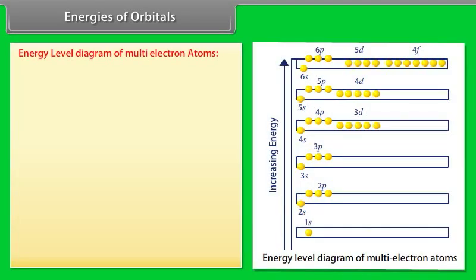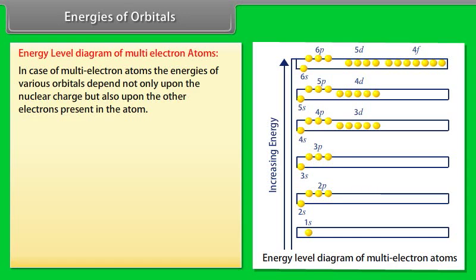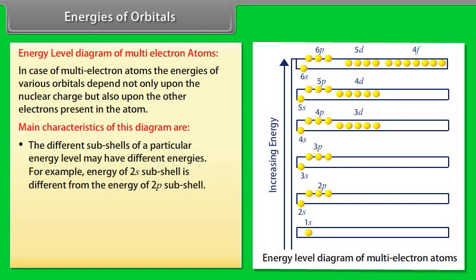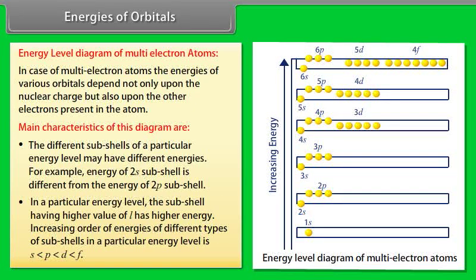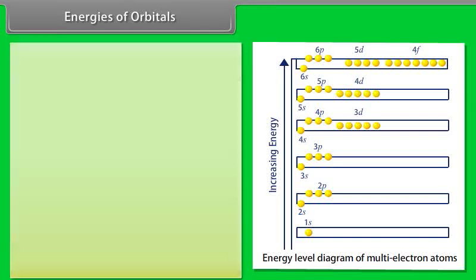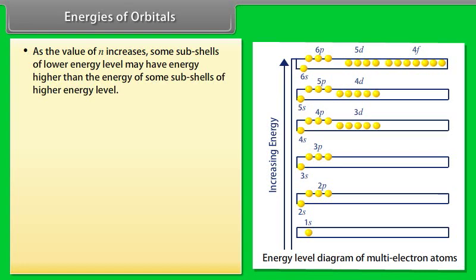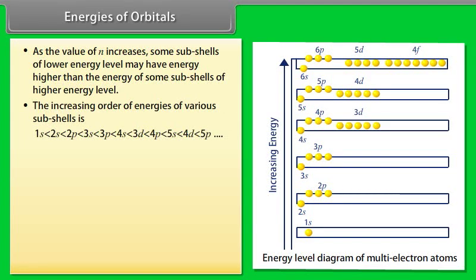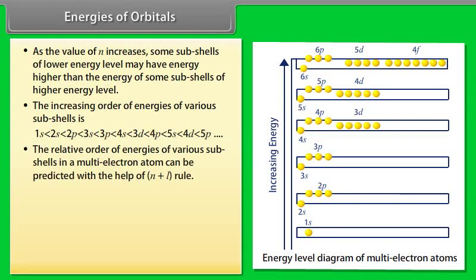Energy Level Diagram of Multi-Electron Atoms: In multi-electron atoms, the energies of various orbitals depend not only upon the nuclear charge but also upon the other electrons present in the atom. Key characteristics: (1) Different subshells of a particular energy level may have different energies — for example, the energy of the 2S subshell is different from that of 2P. (2) In a particular energy level, the subshell with higher value of L has higher energy. (3) As N increases, some subshells of a lower energy level may have energy higher than some subshells of a higher energy level. (4) The relative order of energies of various subshells in a multi-electron atom can be predicted using the N+L rule.